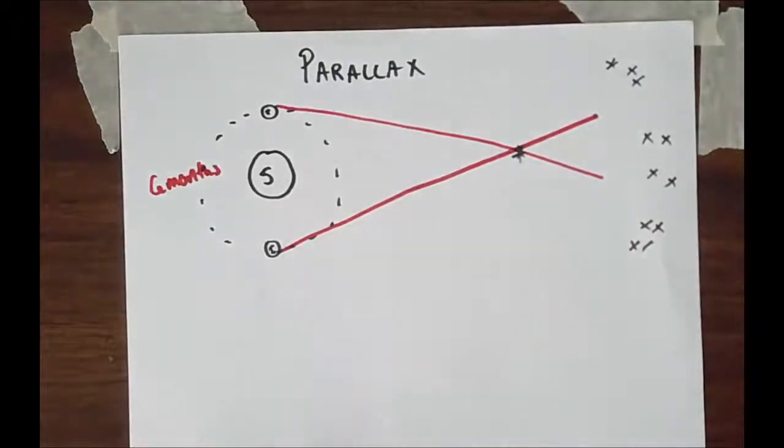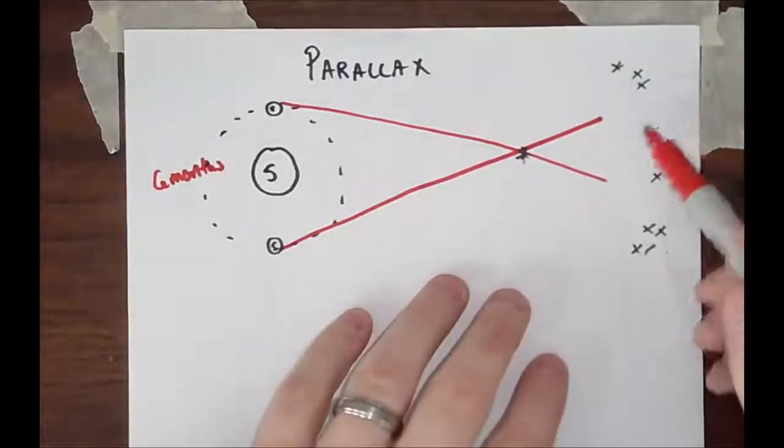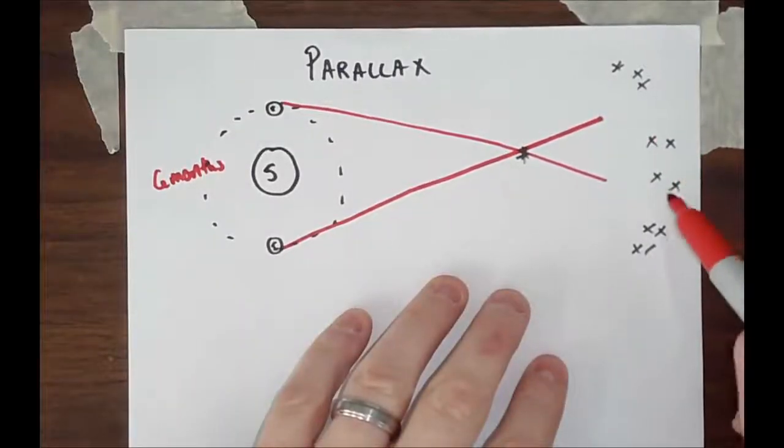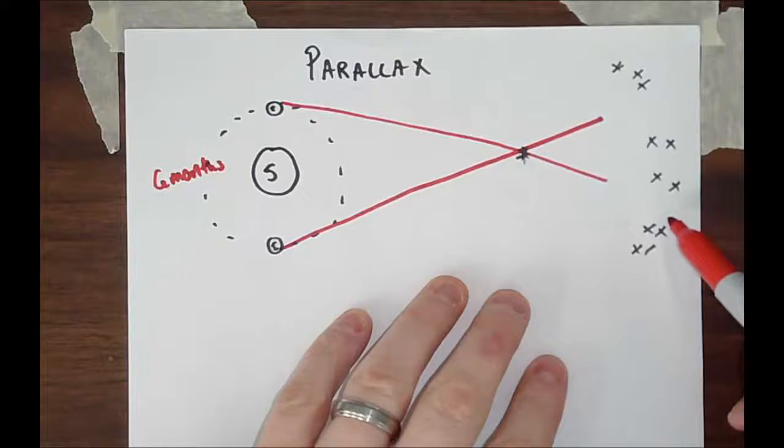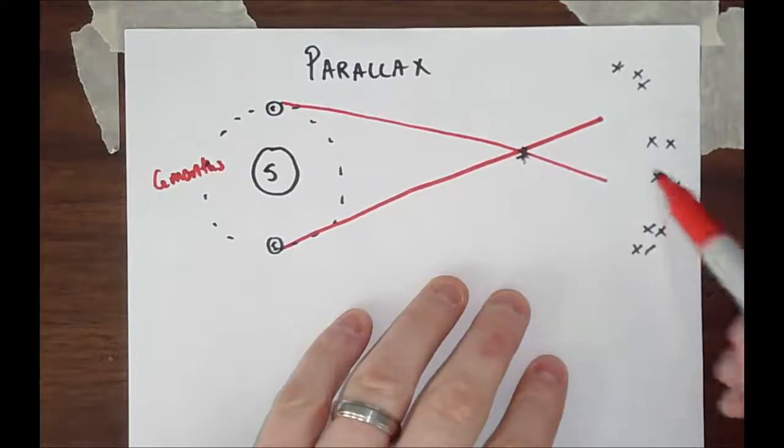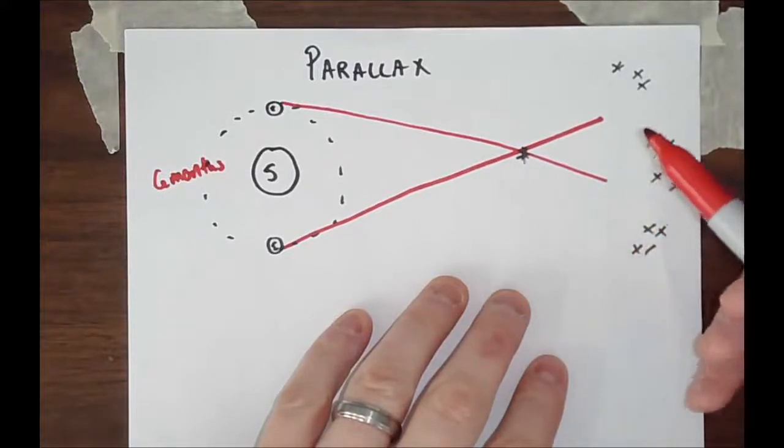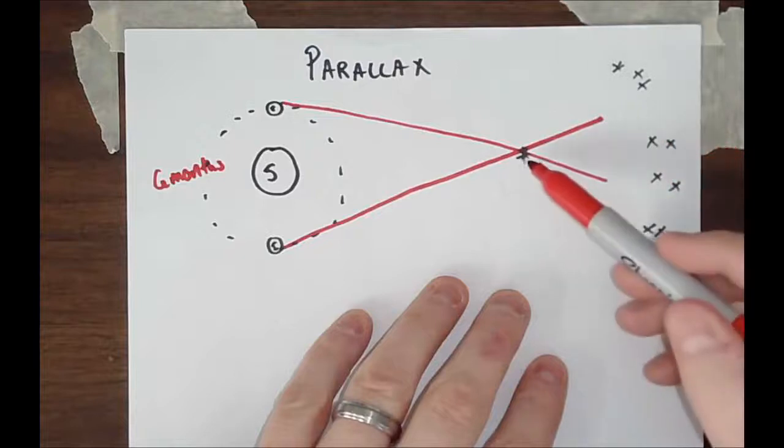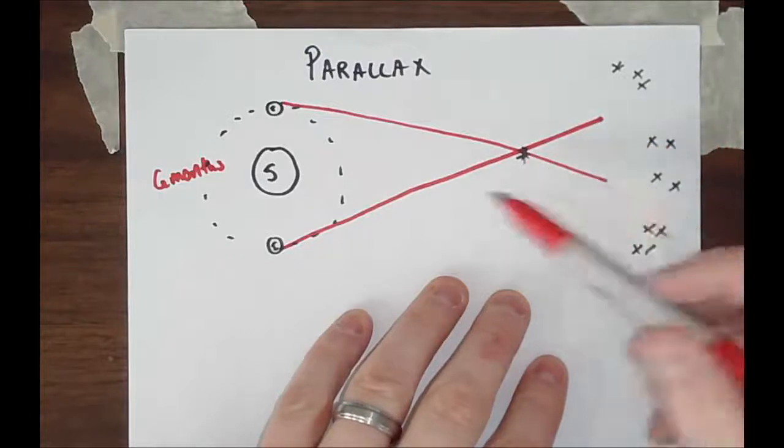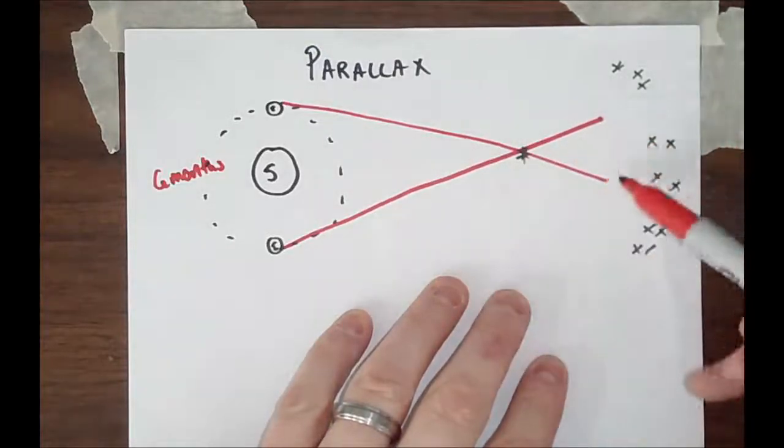And what's cool is the background stars, for example, they're so, so far away that they don't really change that much. But what's interesting is, objects, celestial objects, or even objects in our solar system, when you view them from a different perspective during different times of the year, they will appear to move. They'll shift.